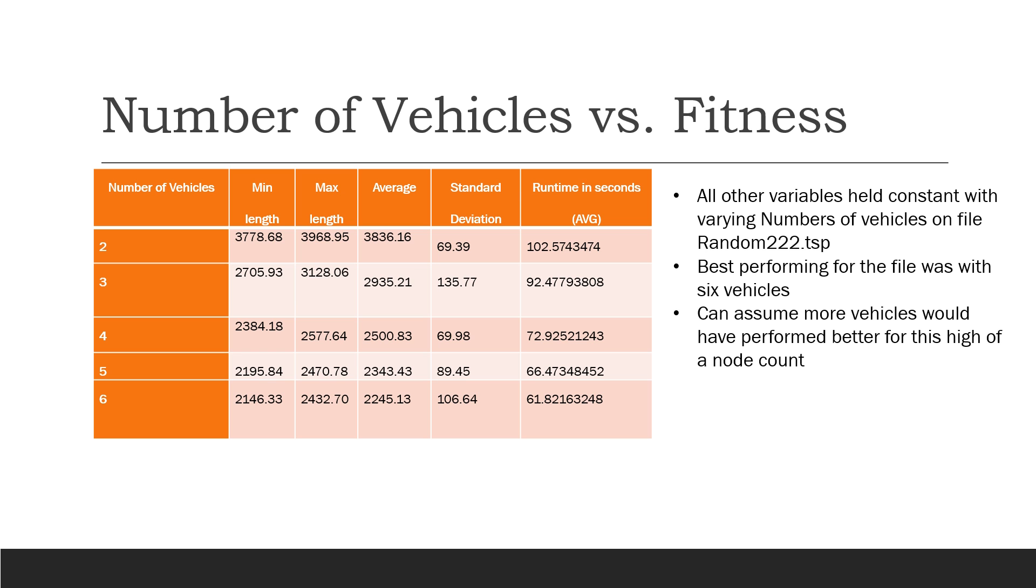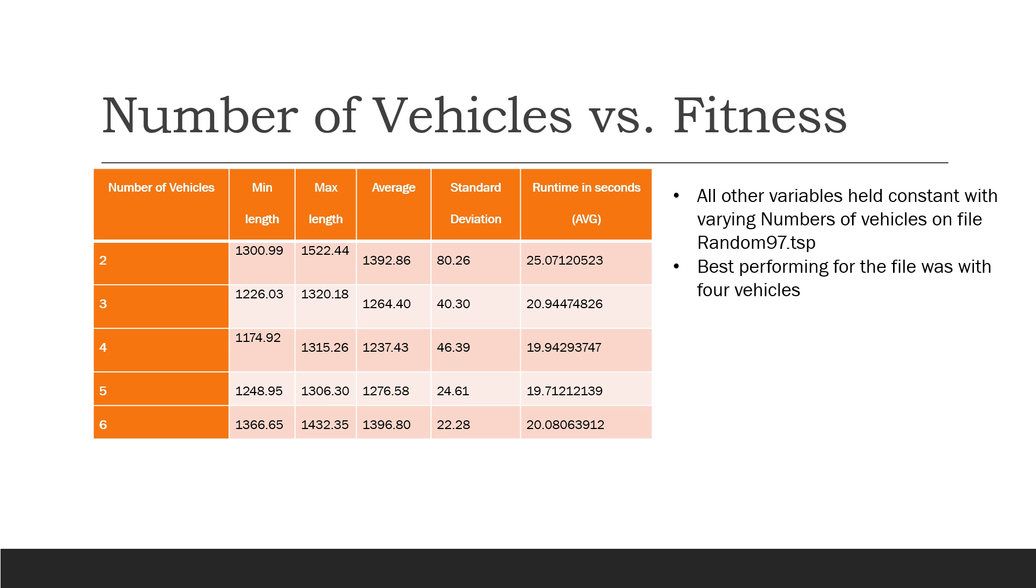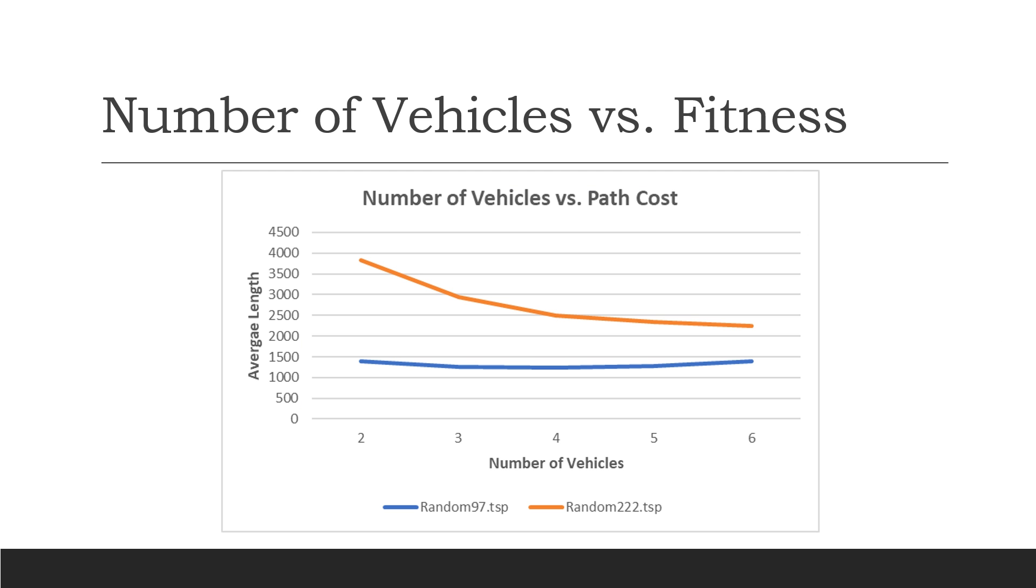Here's another example of pretty much the same data, but this time with the Random 222.tsp file. For this one, the best performing was six vehicles, and we could also assume from this that it would probably be better at a higher vehicle count just because of how large this file is. This was mainly to show the similarities from the last slide for the number of vehicles, two to six vehicles. You can see the runtime decreasing as the number of vehicles increases, but you can also see from the other side that the standard deviation when you get to a higher number of vehicles tends to get smaller since you'll have more consistency and more easily optimized routes.